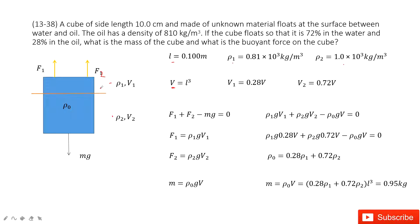F₁ is the buoyancy from the oil displaced, equal to ρ₁gV₁. F₂ is the buoyancy from the water displaced, equal to ρ₂gV₂. And the mass M equals ρ₀gV, where ρ₀ is the cube's density.